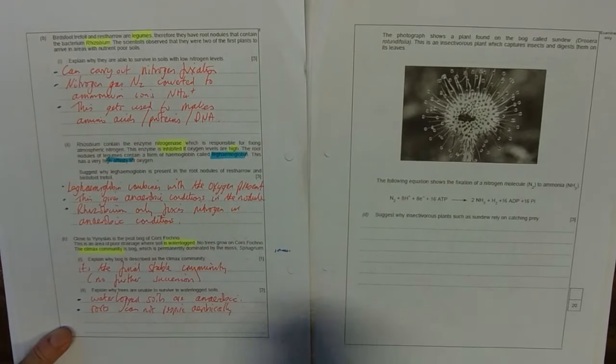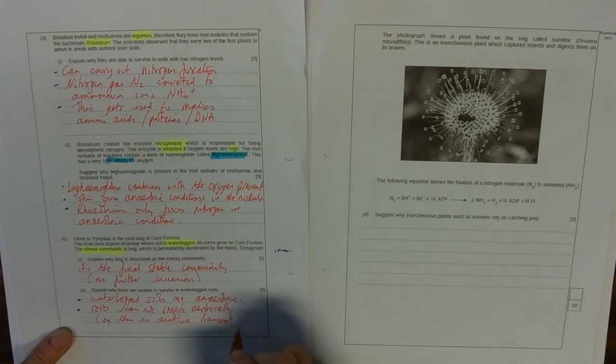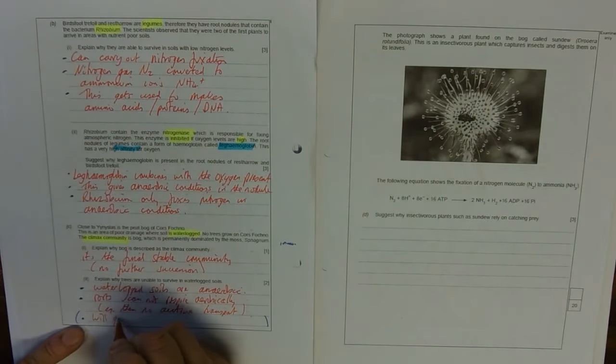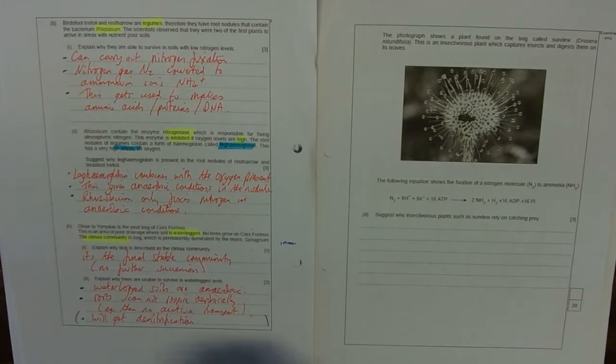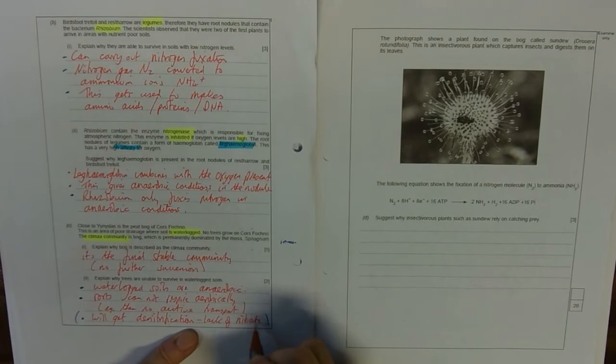So that's enough. But we could do, we could say, EG, then no active transport. That's where we are heading to. Or we could say a completely different point that you might know from your nitrogen cycle. You might say, well, we'll get denitrification. If you've learned your, usually the last thing that you learn on the nitrogen cycle. So denitrification. So there'd be lack of nitrate for the roots. Or lack of the nitrate ions that roots take up. So lack of nitrate.